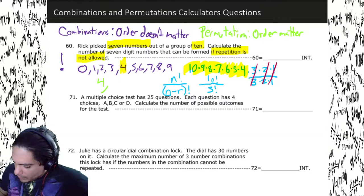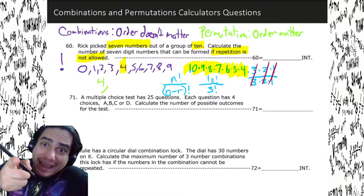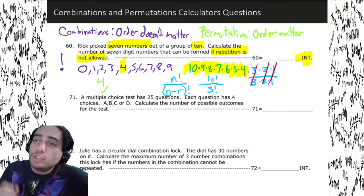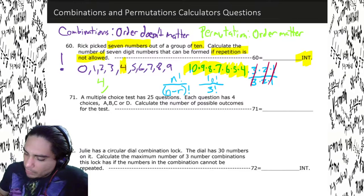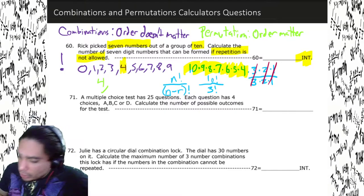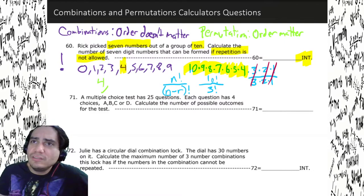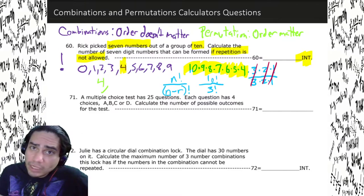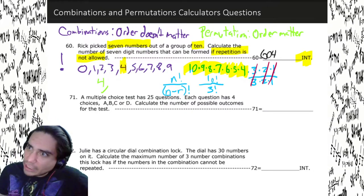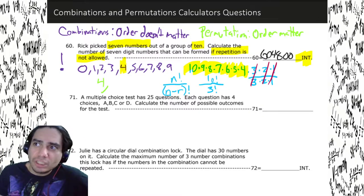So I'm gonna hit ten factorial, then three factorial, hit the vibe, connect them — it gives 6.05 times 10 to the fifth. But you have to round it. This is an integer problem — you cannot write scientific notation. You've got to hit yellow show and write the exact integer: six hundred and four thousand eight hundred. So the answer is 604,800.